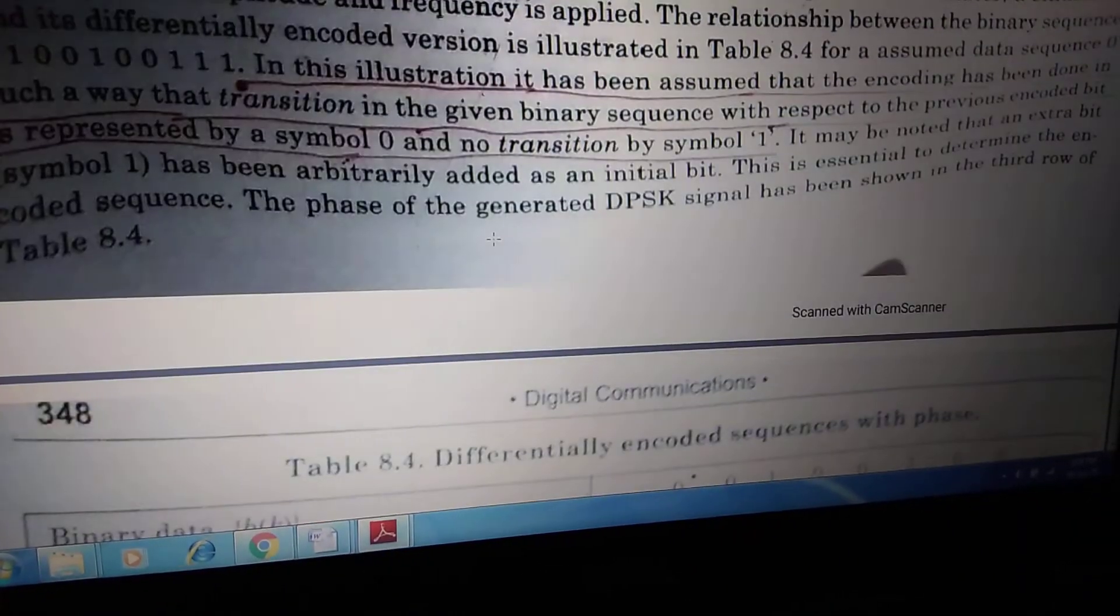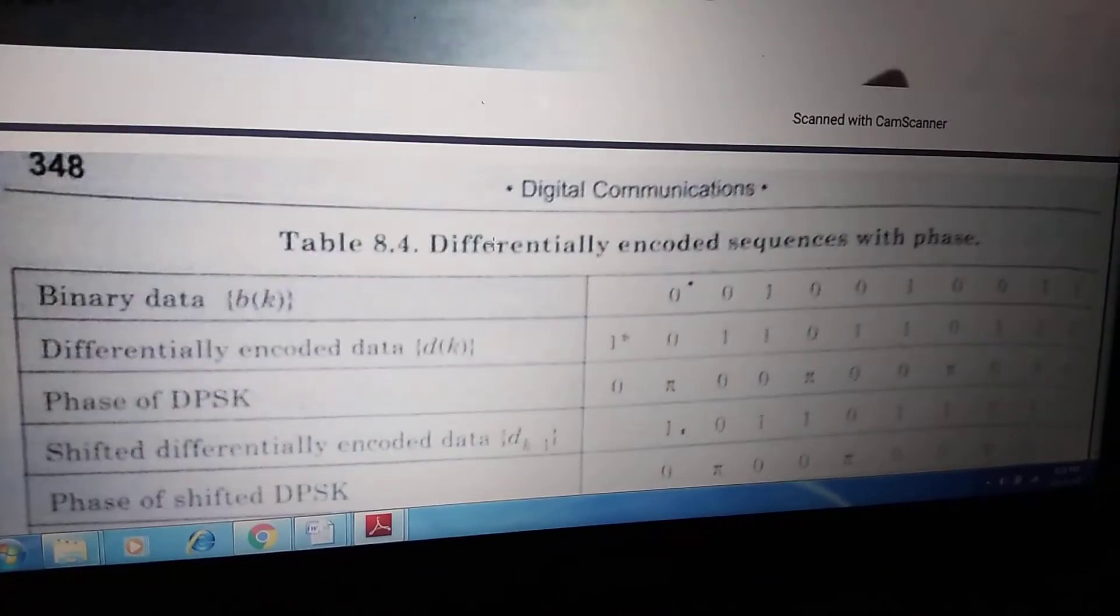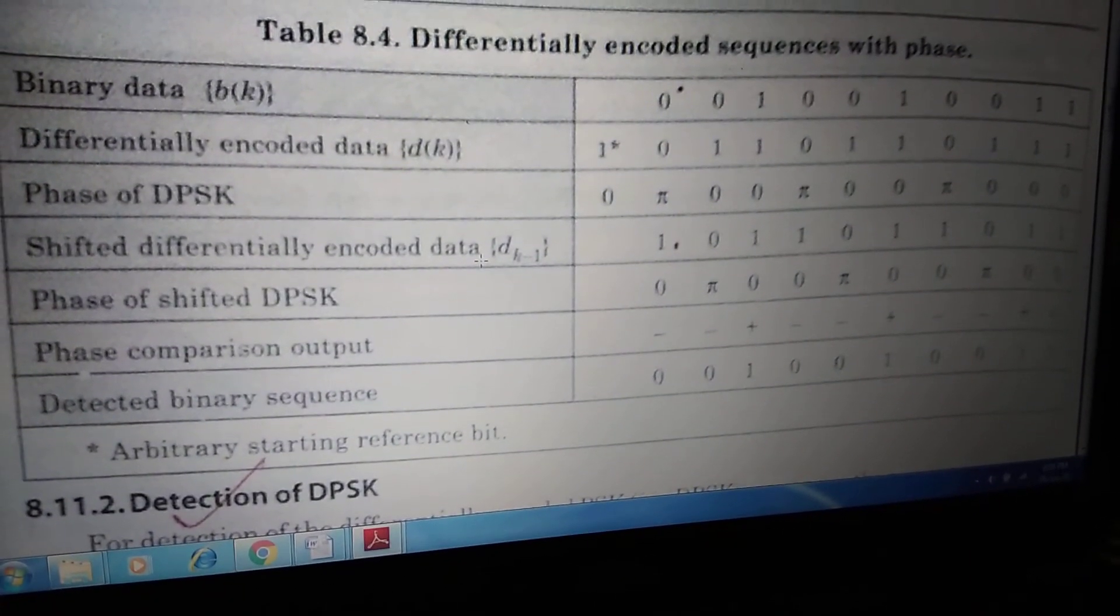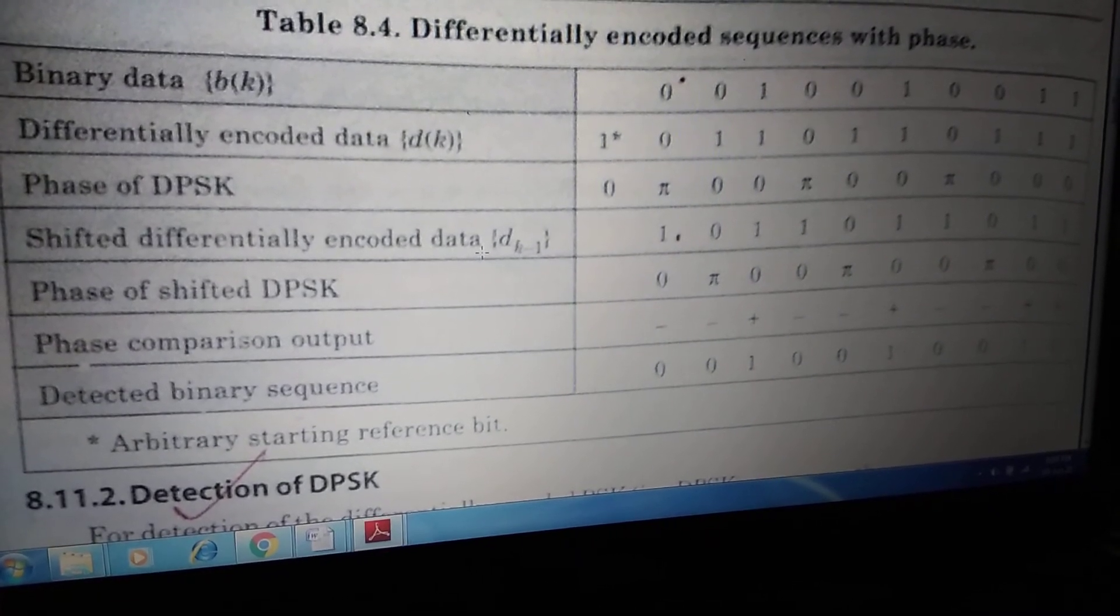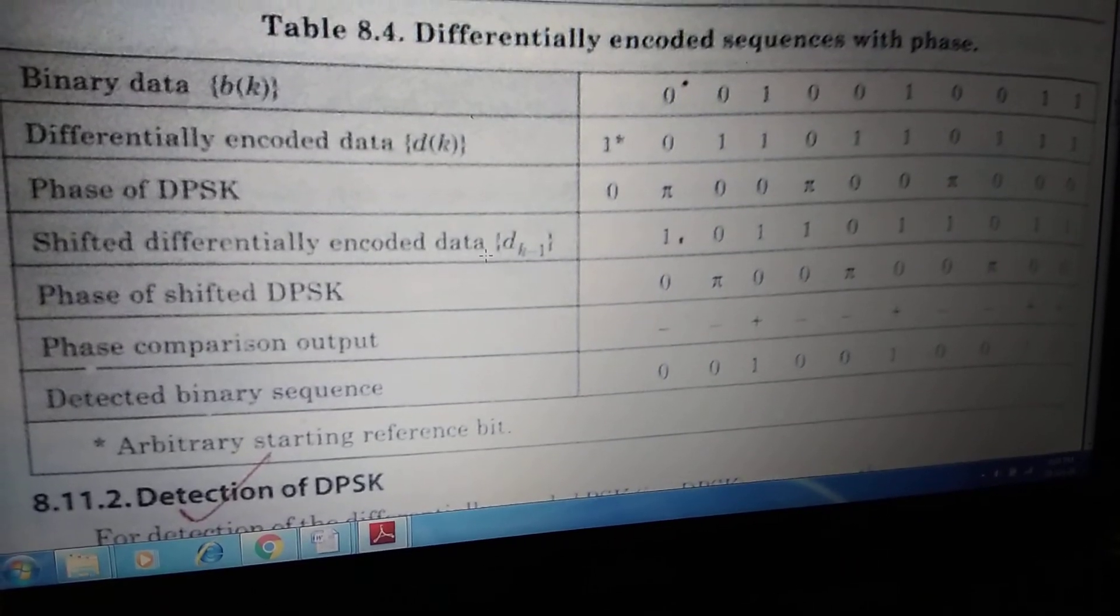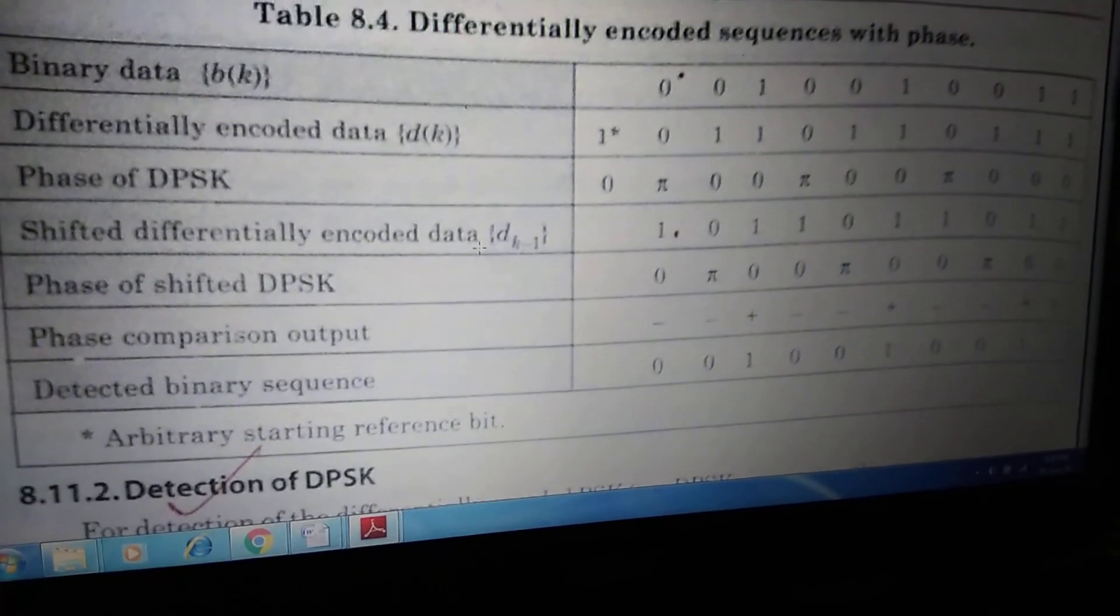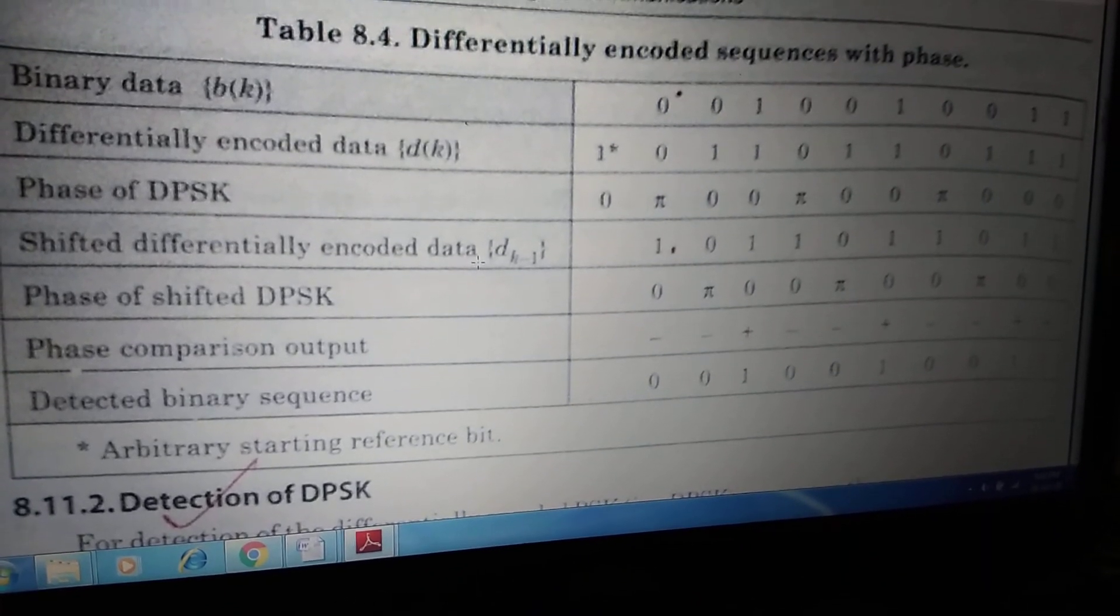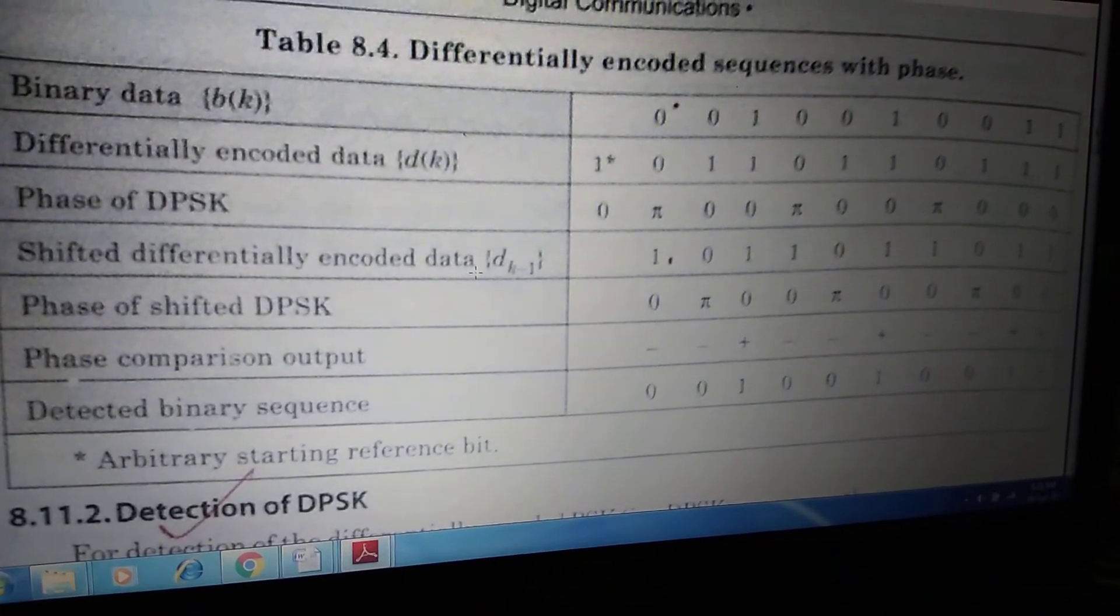Now, that is a very important part. We will see the schematic diagram of the DPSK. That means we will take one reference bit or reference random binary sequence. That is the binary data of B of K. In this case, we are taking 0010010011. And depending upon this input, that is the differential encoded data D of K, Phase of DPSK, shifted differentially encoded data D of K minus 1, phase of shifted DPSK, phase comparison output, detected binary sequence. Depending upon that, we can perform or form this table. That is called the differentially encoded sequences with phase.